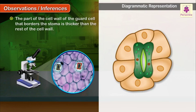The part of the cell wall of the guard cell that borders the stoma is thicker than the rest of the cell wall.